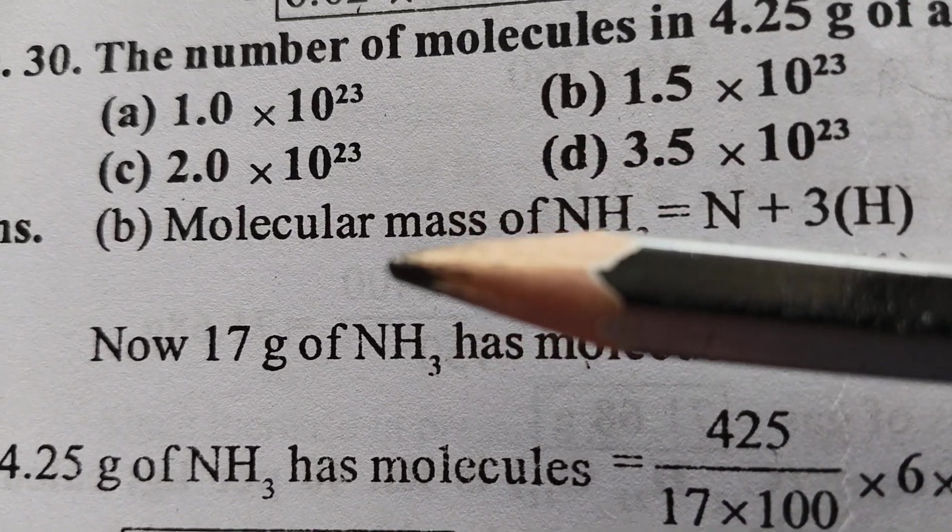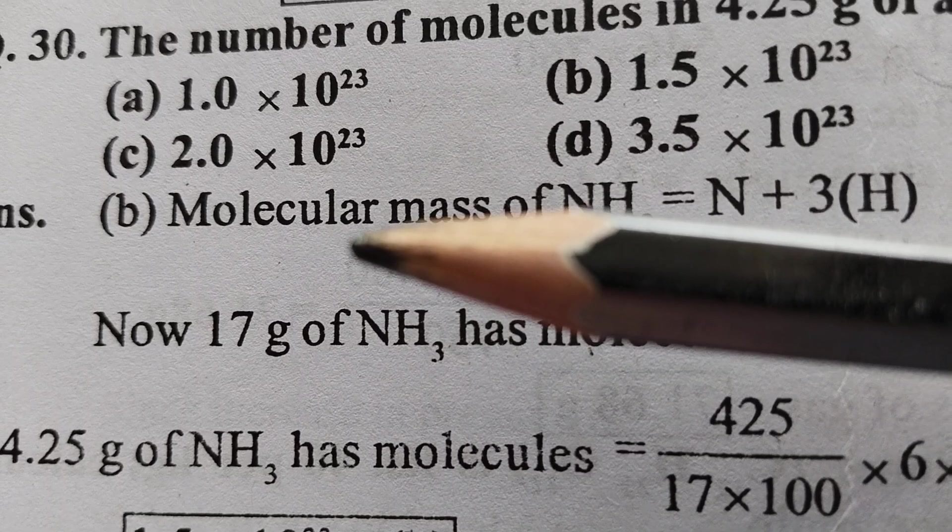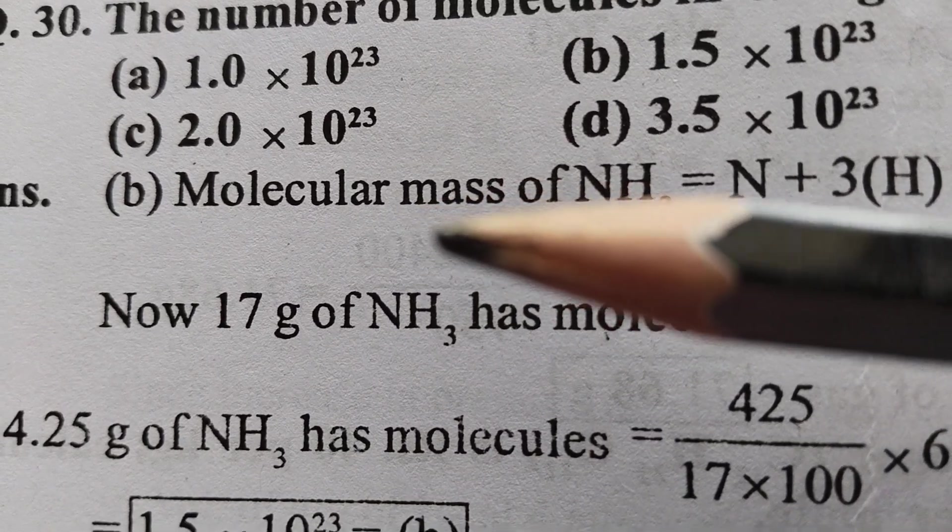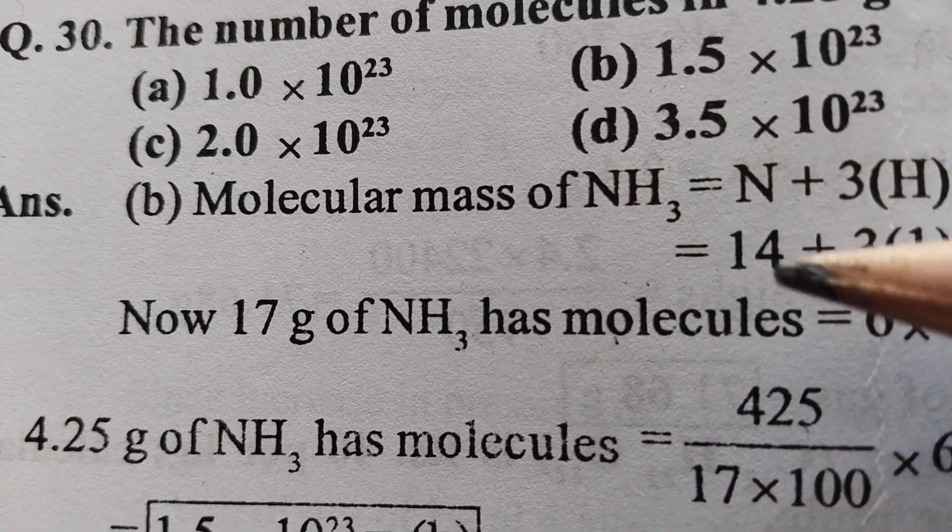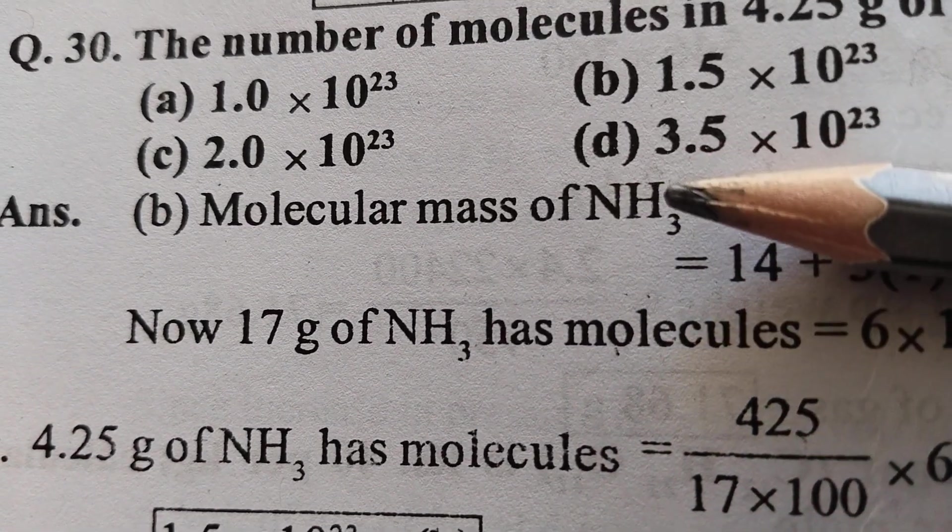So what you have to do: if you know the molecular mass or molar mass—that is ammonia—nitrogen atomic weight 14, hydrogen atomic weight 1.